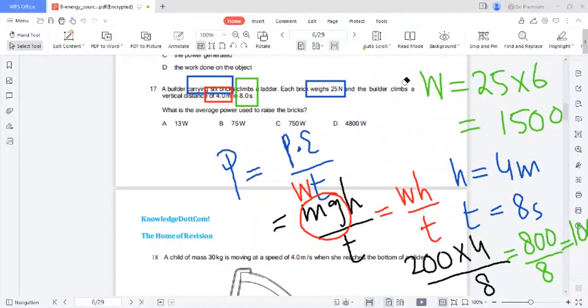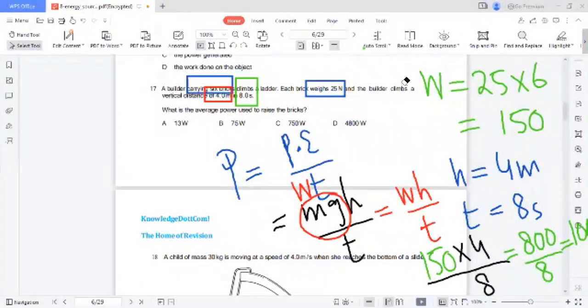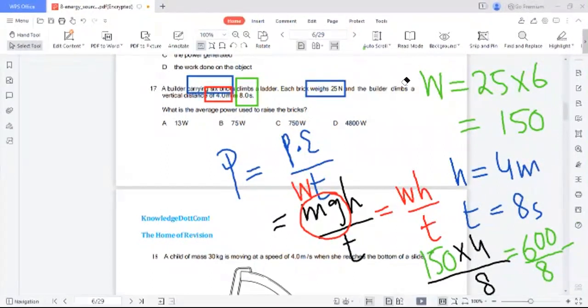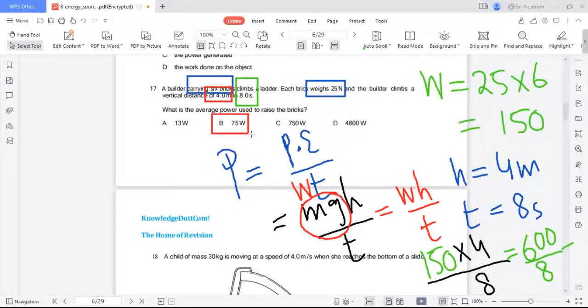150 times 6... and 150 times 4 is 600. 600 divided by 8 is 75. One second, 600 divided by 8 is 75. So this is our correct option.